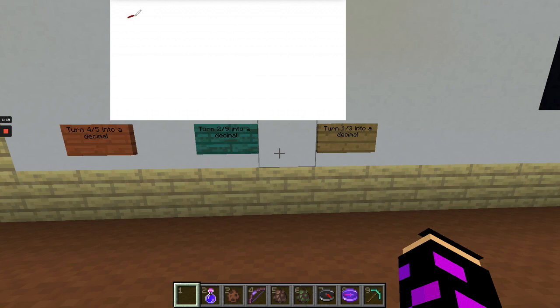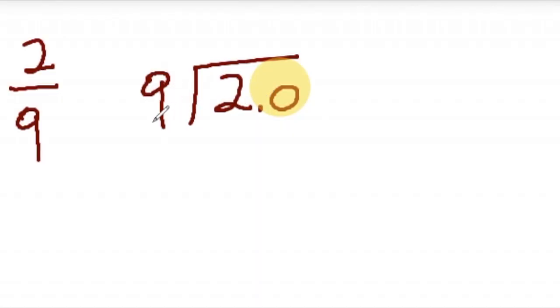Here we have the fraction two over nine, two-ninths, which you know is the same as two divided by nine. Let's call this 2.0. Nine goes into two zero times. And the decimal comes up. How many times does nine go into 20?